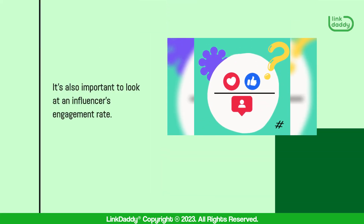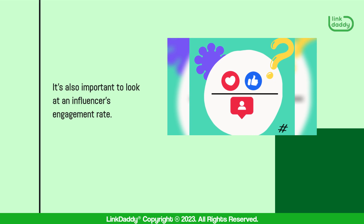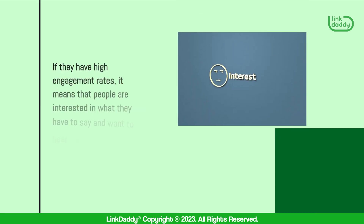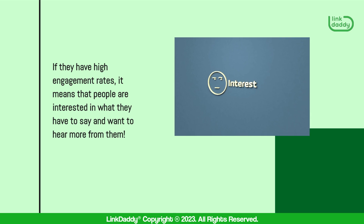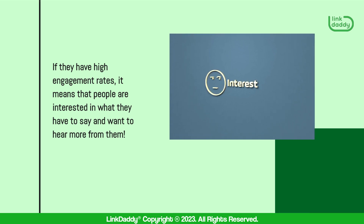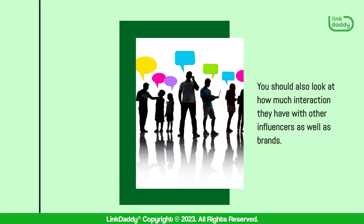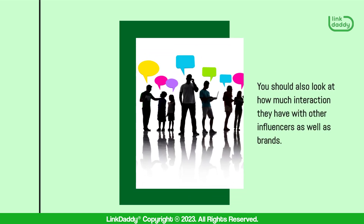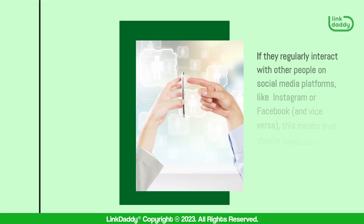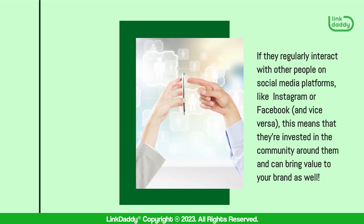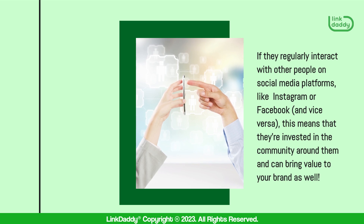It's also important to look at an influencer's engagement rate. How often do people engage with their content? If they have high engagement rates, it means that people are interested in what they have to say. You should also look at how much interaction they have with other influencers as well as brands. If they regularly interact with other people on social media platforms like Instagram or Facebook, this means that they're invested in the community around them and can bring value to your brand as well.